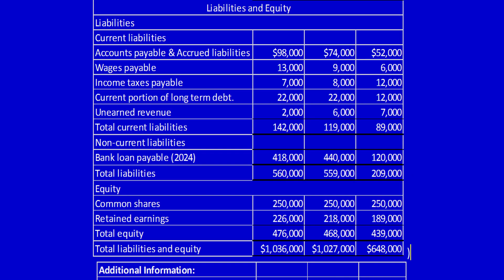Let's just page down for a moment. Orange's current liabilities includes accounts payable and accrued liabilities, wages payable, income taxes payable, current portion of long-term debt, and unearned revenue. These are the liabilities that will either be paid or settled in the upcoming year.